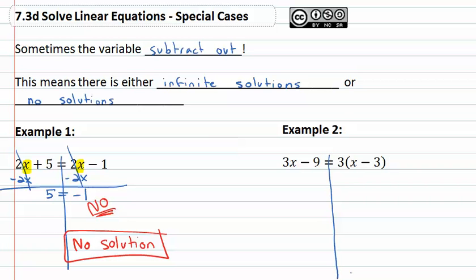On the second example, we can start by distributing the 3. So we get 3x minus 9 equals 3x minus 9, and then again the variable is on both sides. So we'll subtract 3x from both to get it on one side, but again a funny thing happens. The x's subtract out to 0 completely, and we're just left with negative 9 on one side and negative 9 on the other side.